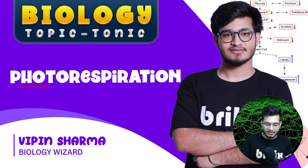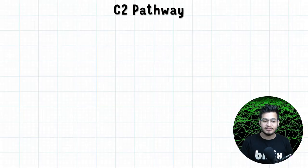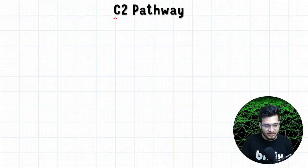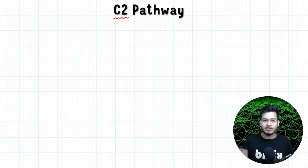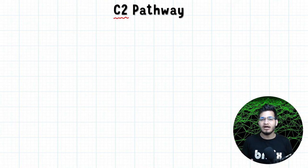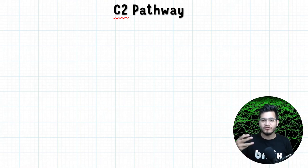Let's begin with what photorespiration is. Photorespiration is also called the C2 pathway. As we have seen earlier, the C3 pathway or C3 cycle is called C3 because its first stable product has 3 carbons, which we called phosphoglyceric acid or phosphoglycerate.